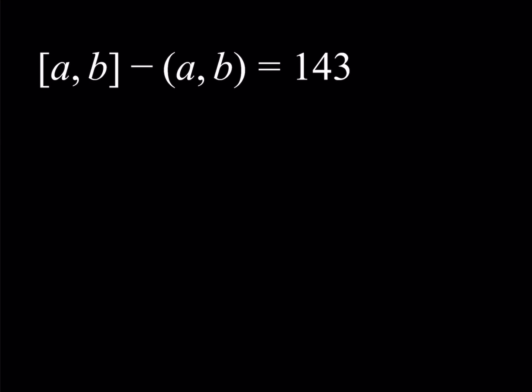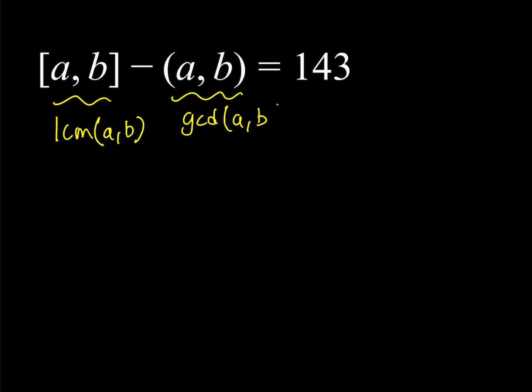Hello, everyone. In this video, we're going to be solving a GCD-LCM problem. We're doing this type of problem for the first time, and this type of notation is very commonly used. If you use brackets like [A, B], this means the LCM of two numbers. And parentheses like (A, B) means the GCD of two numbers, which is the greatest common divisor. LCM stands for least common multiple.